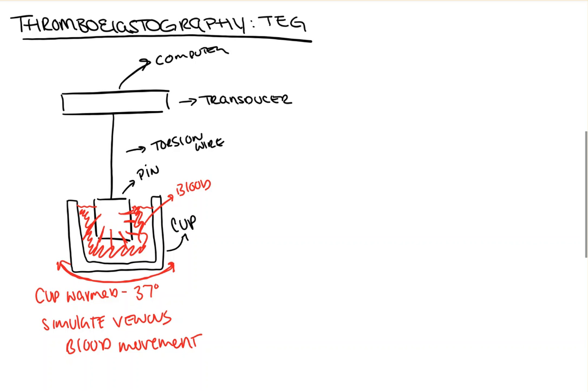And now, as the cup oscillates and the blood moves, the pin submerged begins to move with it. And as a result, you get a measurement in which the amount of pin motion is directly proportional to the strength of the clot. This motion is then recorded and displayed in an output, and we'll discuss that next.